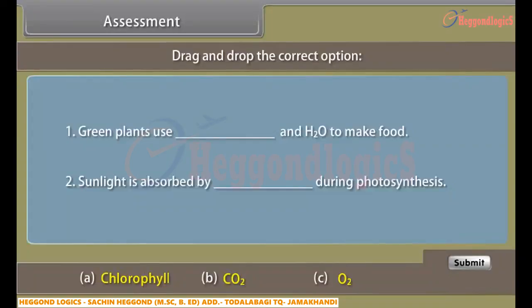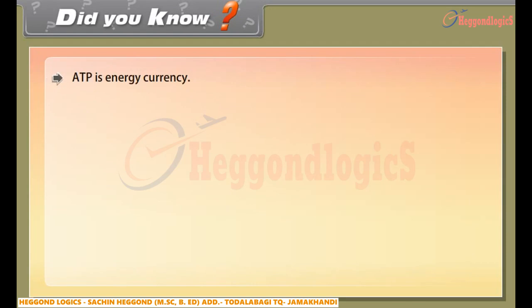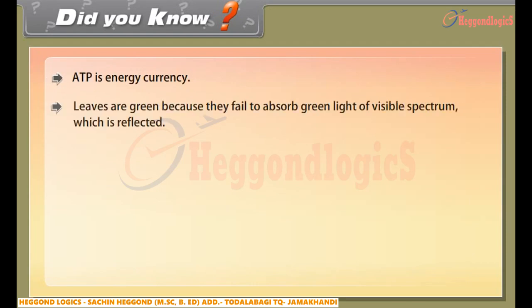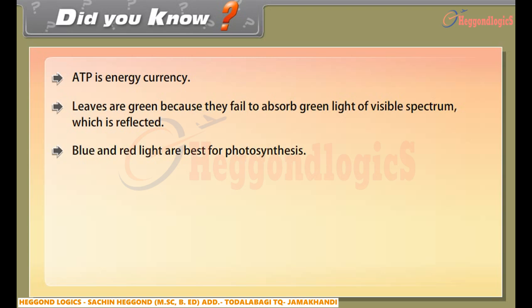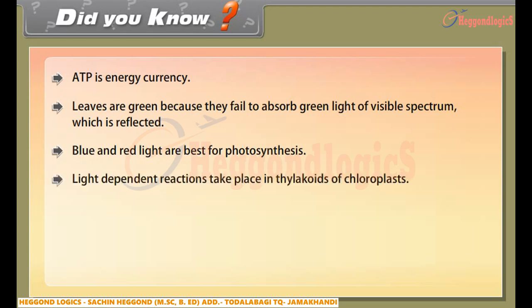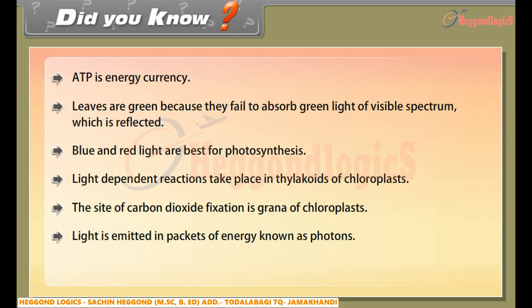Did you know: ATP is the energy currency of the cell. Leaves are green because they fail to absorb green light of the visible spectrum, which is reflected. Blue and red light are best for photosynthesis. Light-dependent reactions take place in the thylakoids of chloroplasts. The site of carbon dioxide fixation is the stroma of chloroplasts. Light is emitted in packets of energy known as photons. The splitting of water is known as photolysis.